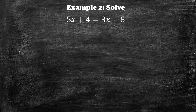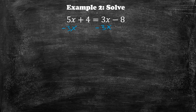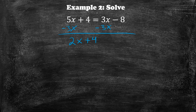Example number 2, we want to solve this equation. Looking at it, we see that there's an x on the left side and an x on the right side, as well as numbers on both sides. So we want to get all the x's to one side and everything else to the other side. We do that first by subtracting 3x from both sides, giving us 2x plus 4 is equal to negative 8.